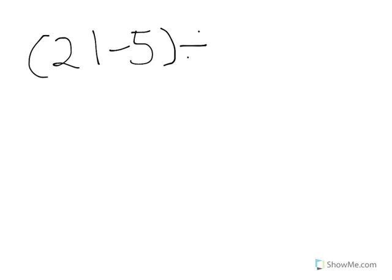Then I put a division sign and I put 5 plus 3. And now my order of operations problem is 21 minus 5 divided by 5 plus 3.